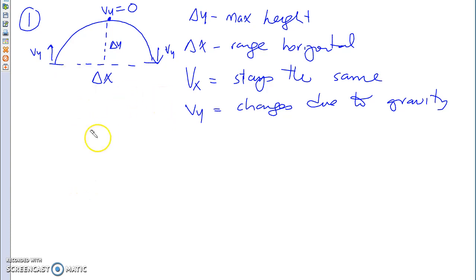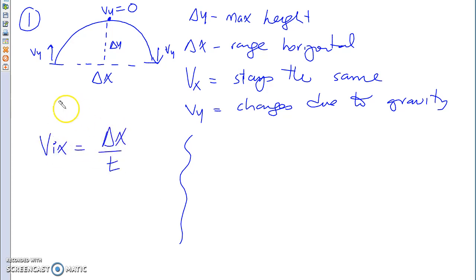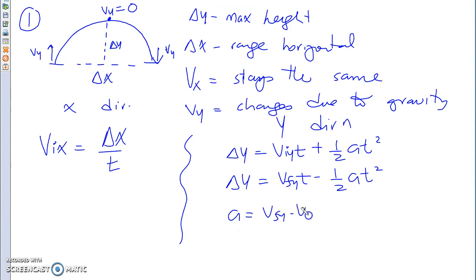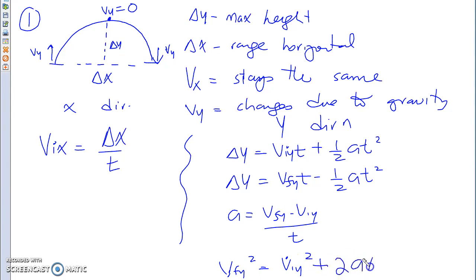The formulas we divided into the following: in the x direction, vx equals delta x divided by t. In the y direction, the formulas are: delta y = viy·t + ½a·t², delta y = viy·t − ½a·t², a = (vfy − viy)/t, and vfy² = viy² + 2a·delta y. These are the formulas we use to solve projectile motion — the first set is for the y direction, the second is for the x direction.